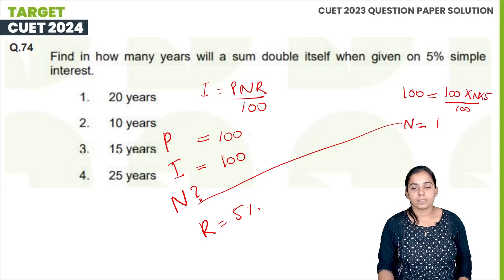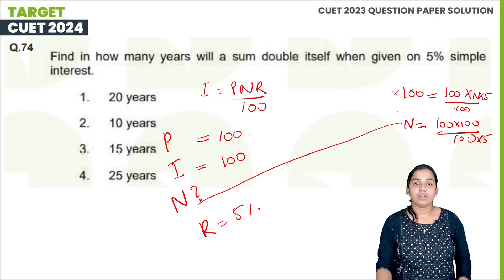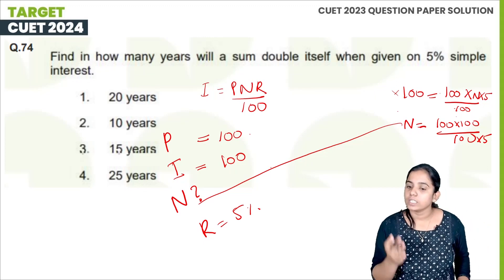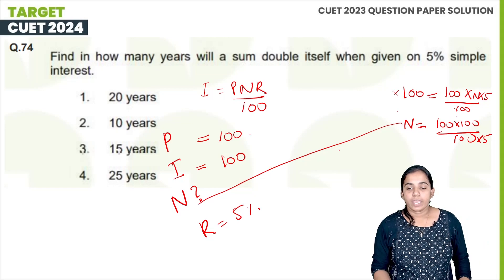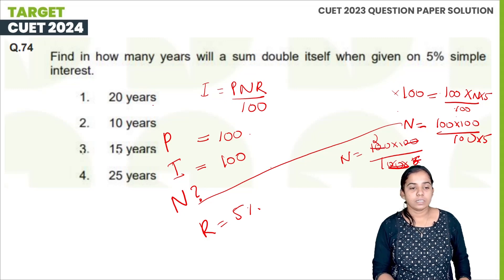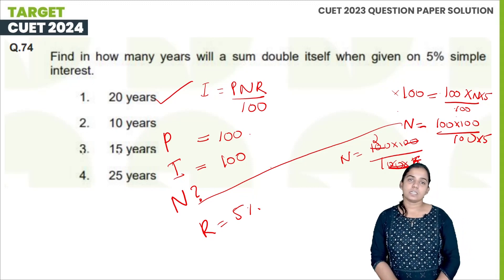So N = 100 / (100 × 5) × 100, which simplifies to N = 100 divided by 5, giving us N = 20. The number of years is 20.